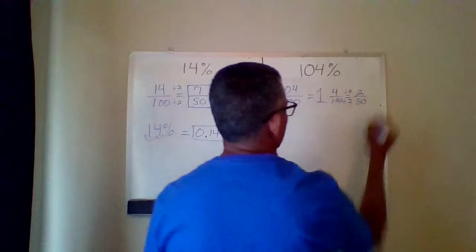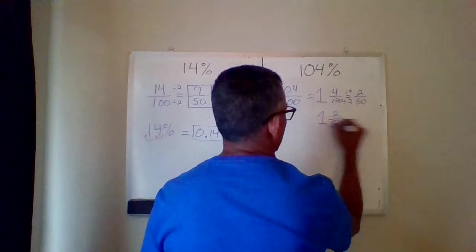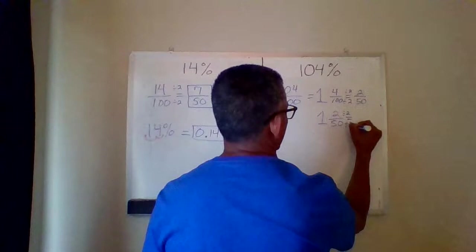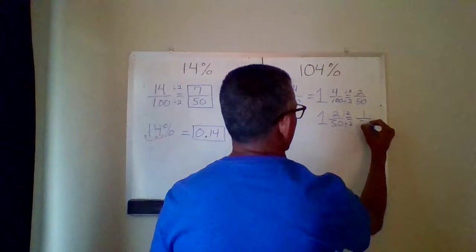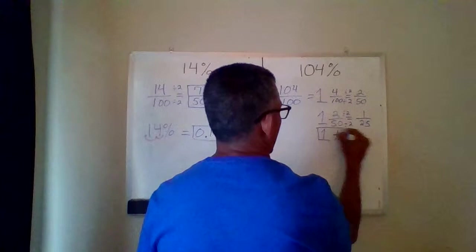But I'm not done yet because that two fiftieths can be simplified further. Two fiftieths divided by two again. Two divided by two is one. Fifty divided by two is 25, which leaves me an answer of one and one over 25 as my fraction.